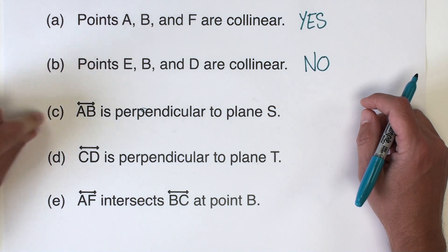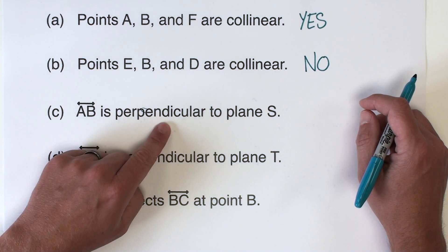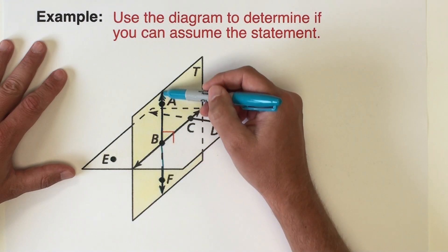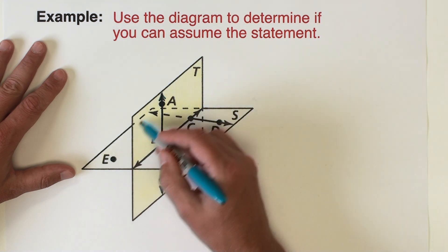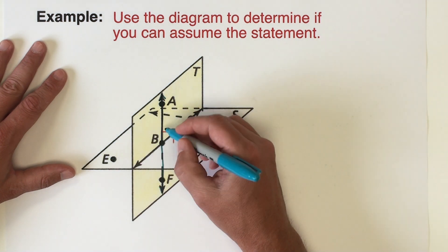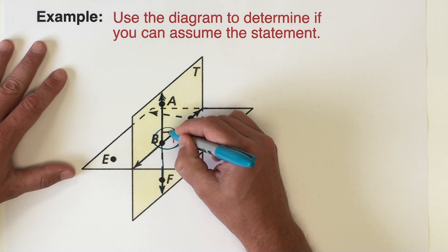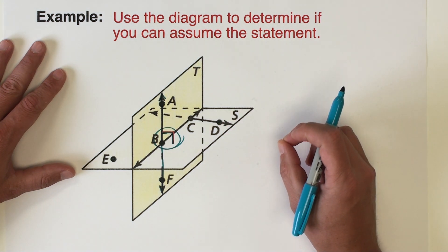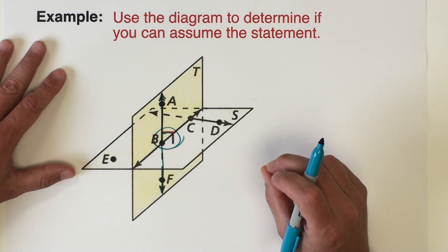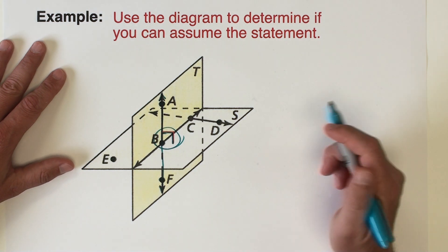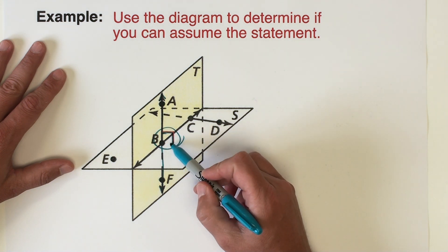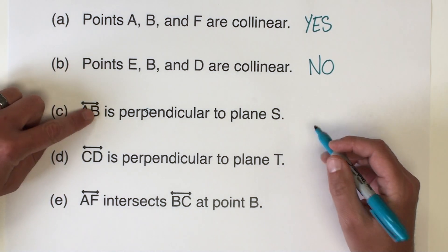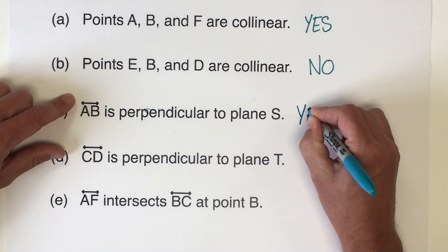The next statement is: line AB is perpendicular to plane S. Line AB is the line from the previous statement. Plane S is the plane going horizontally through the diagram. Notice that there is a right-angle box marked at the intersection. Because that box is illustrated in the diagram, yes, we can assume that line AB is perpendicular to plane S.